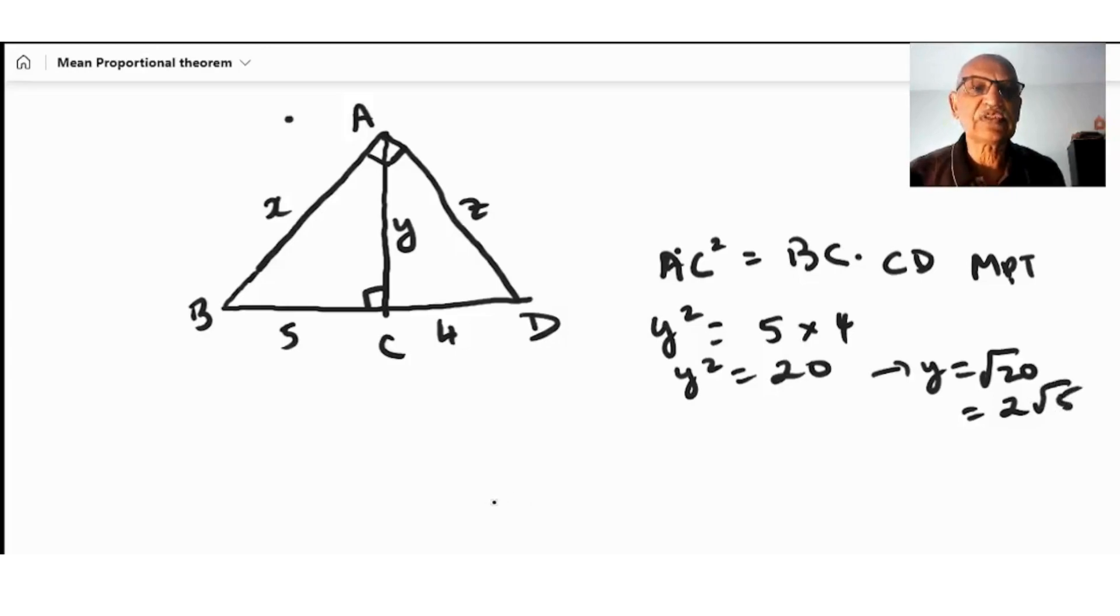Now we have found y, we can find z using the Pythagorean theorem. So z squared is equal to 4 squared plus y squared, which equals 16 plus y squared.